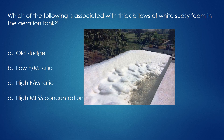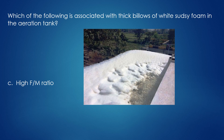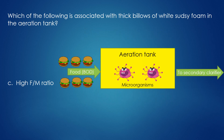Which of the following is associated with thick billows of white sudsy foam in the aeration tank? High FM ratio. Thick billows of white sudsy foam in the aeration tank is encountered during the startup of a plant when the FM ratio is high. During startup, there aren't a lot of microorganisms inside the aeration tank, but there's plenty of food or BOD coming in. As a result of this imbalance, there aren't enough microorganisms to eat the available food, which ultimately leads to foaming.